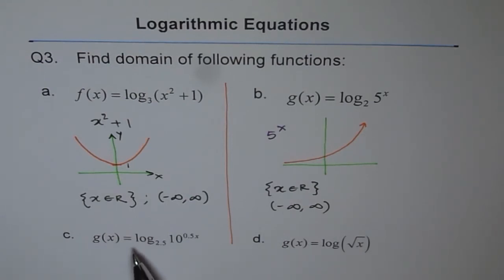C is g(x) log₂.₅(10^(0.5x)) and d is g(x) equals log - if nothing is mentioned here, it means log₁₀ of √x. Perfect.